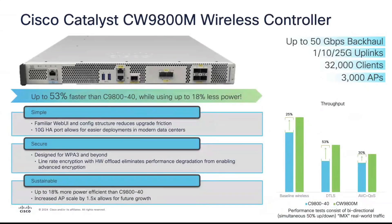The CW9800M has up to 50 Gbps backhaul, supports 1, 10, and 25 gig uplinks, 32,000 clients (same as the 9840), and 3,000 APs — a 50% increase over the 9840. This is a real sweet spot for customers who were in the 1,700–1,900 AP range and wanted growth without buying a dash-80. In addition to the scale increase, it's a lot faster for real-world traffic — 53% faster at the high end with all features enabled — and it's more power efficient, which is a big deal for many customers.